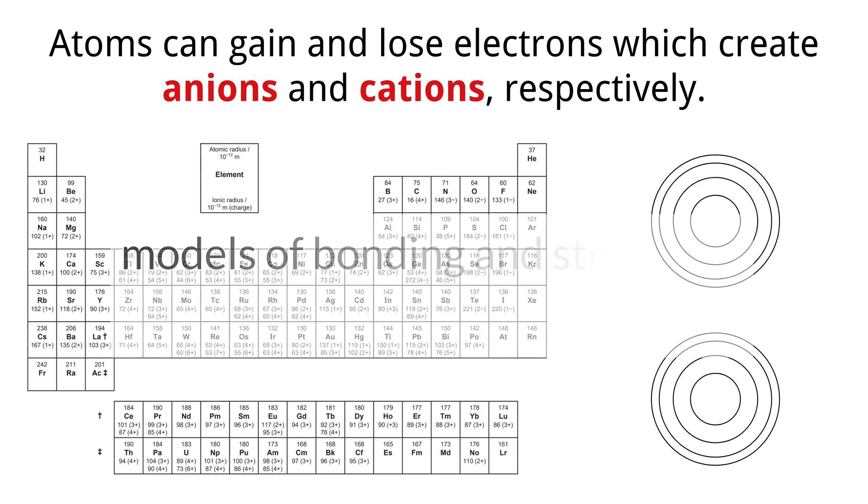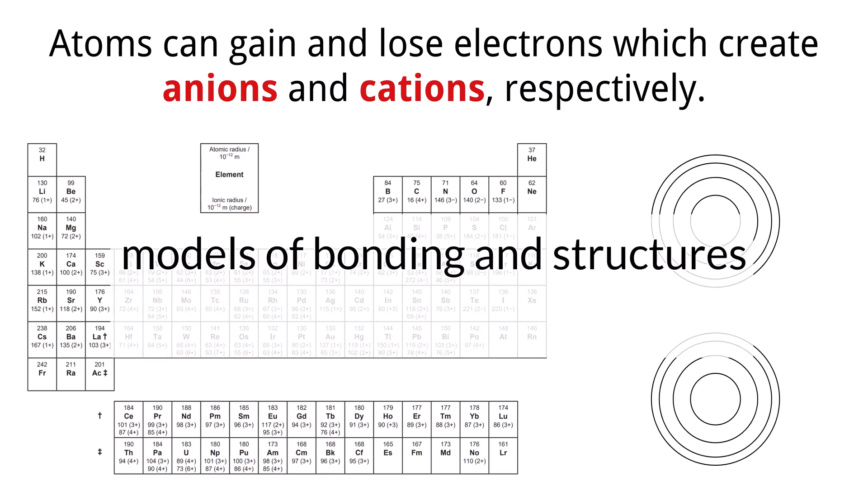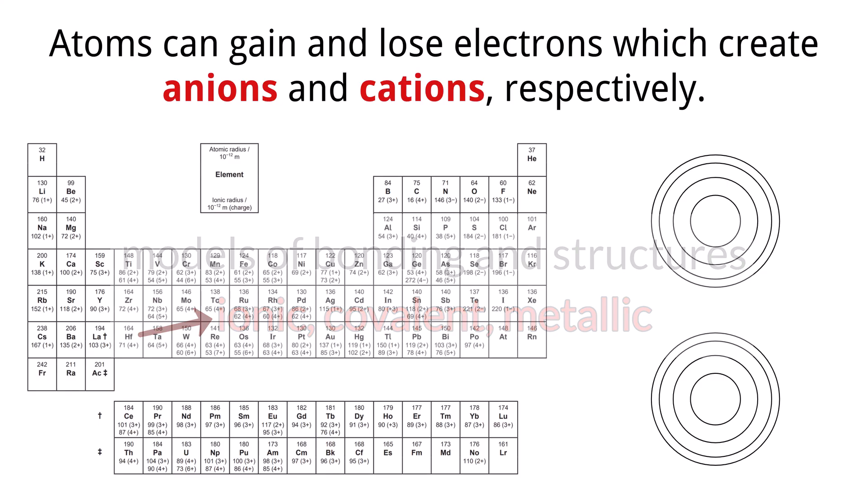Structure 2 is all about models of bonding and structures, and we are going to start to talk through this over the next few videos with different types of chemical bonds that are called ionic, covalent, and metallic. The focus of this video is on the ionic bond, so let's go ahead and dive in.